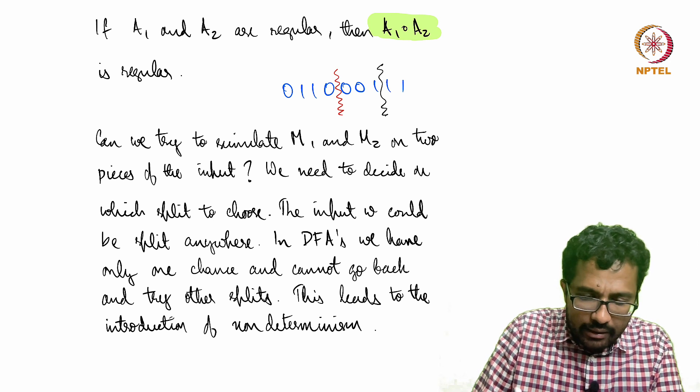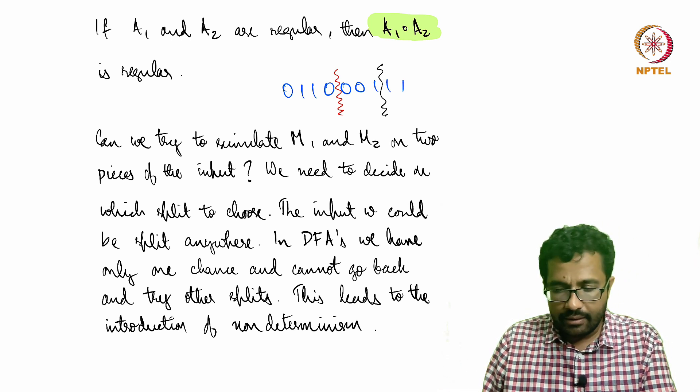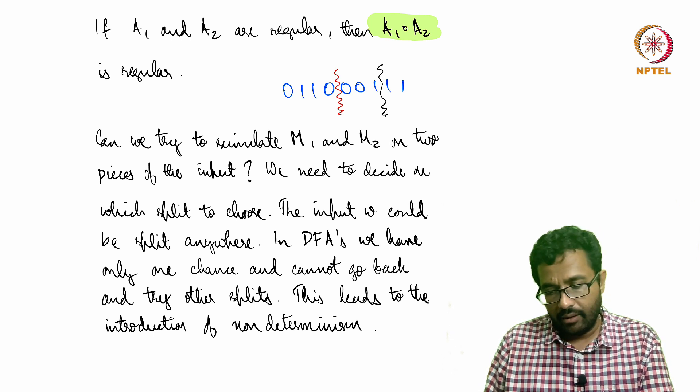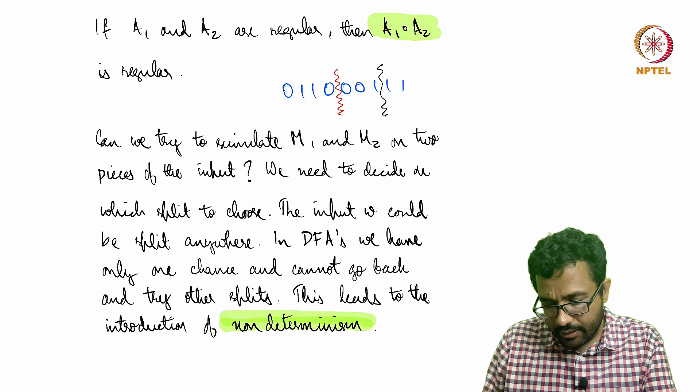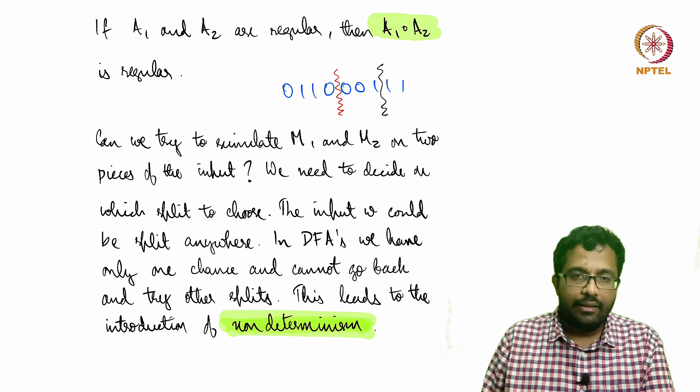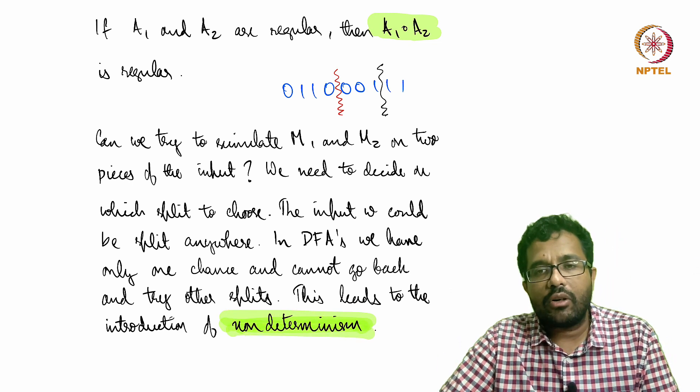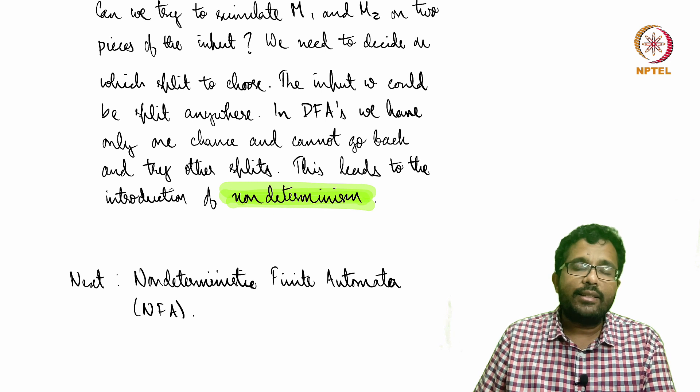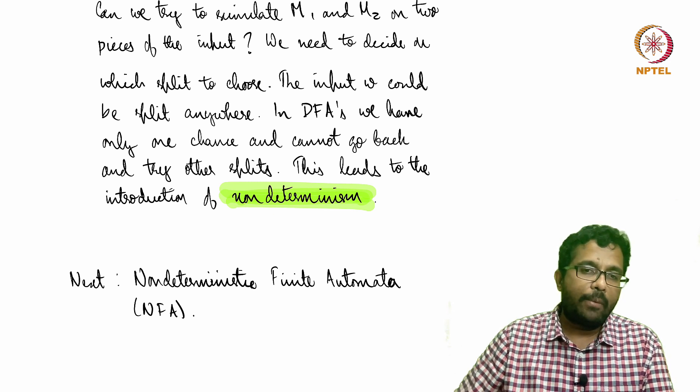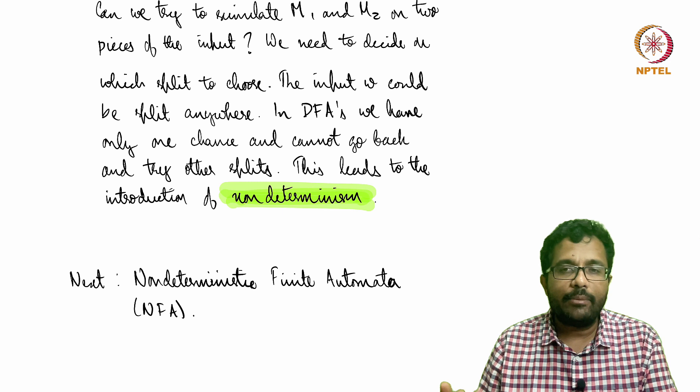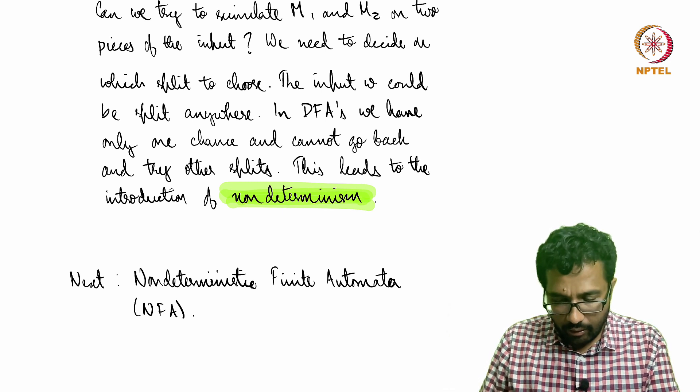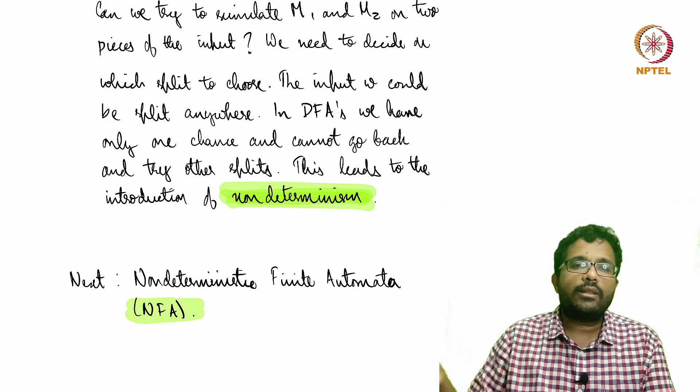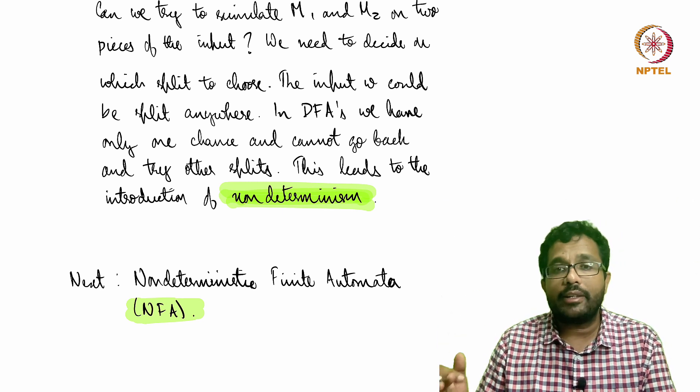It turns out that we cannot do this easily in a deterministic machine or in a DFA. This requires us to think of other concepts, and that leads us to the next concept called non-determinism. The next thing we will see is another type of automaton called non-deterministic finite automata, or abbreviated as NFA. It is just like deterministic finite automata, but instead of deterministic, it is the opposite—it is non-deterministic.